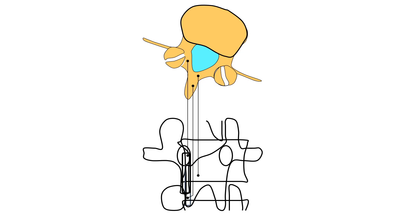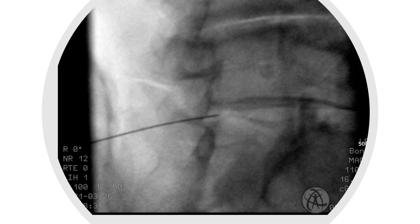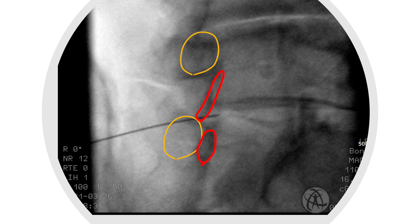I'll show you the schematic drawing of the correlated image once more. The lamina and pedicle are located in this crowded area. If you approach from the left side, use the right oblique image. The yellow circle is the left pedicle. The red circles indicate the profile of the cut section of the lamina.